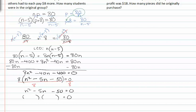I get n minus ten and n plus five. n minus ten equals zero, and n plus five equals zero, so I get n is equal to ten, or n is equal to negative five.